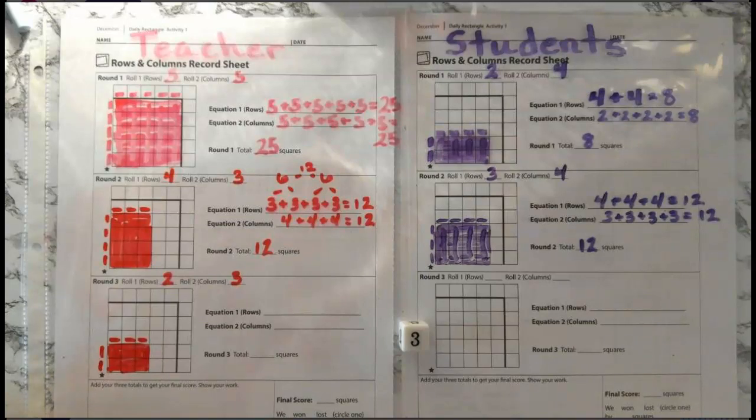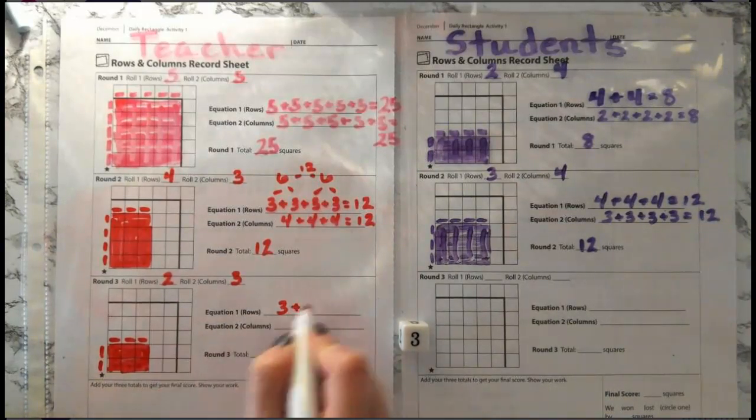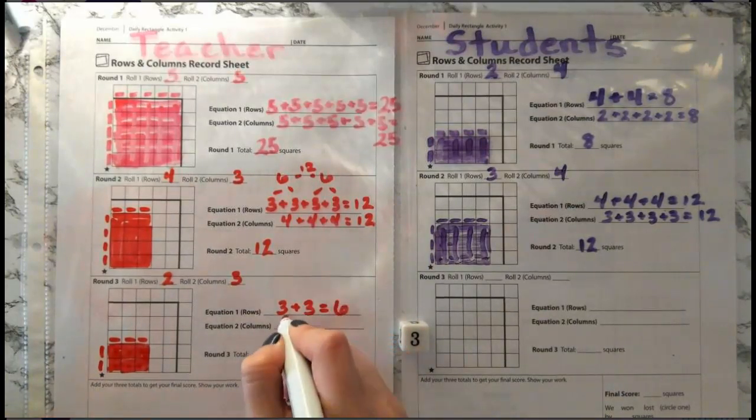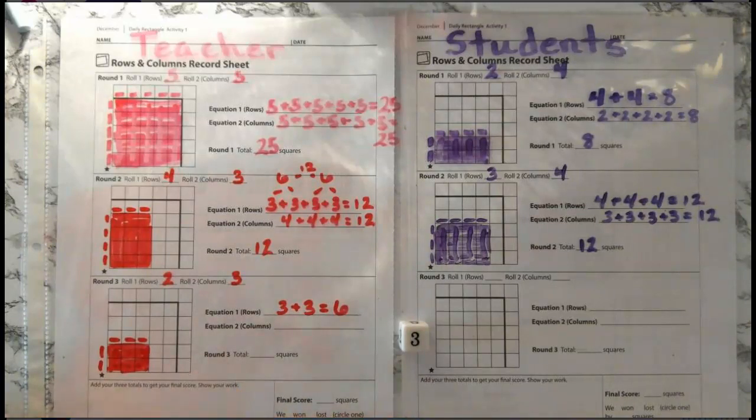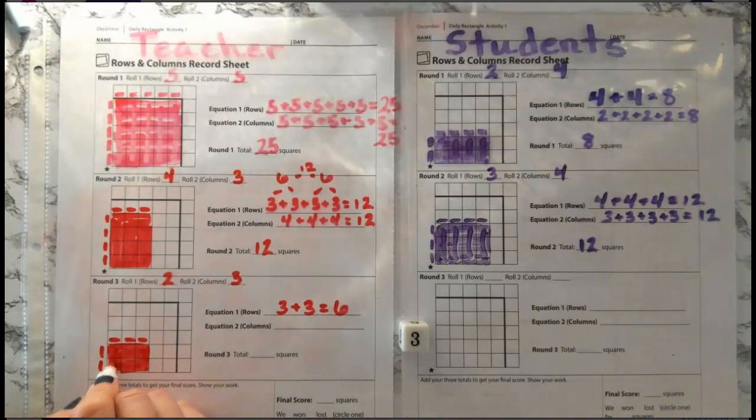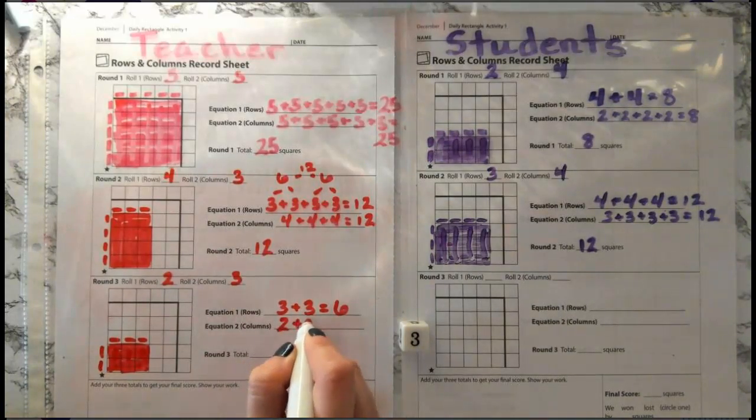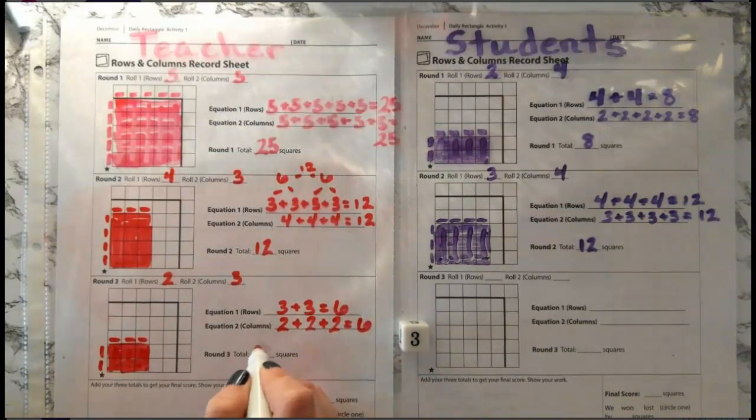What's an equation I could write for my rows? Looking across. If you were thinking three, because I have my first row of one, two, three squares, plus three, because my second row is one, two, three squares, great thinking. They must be the same. Two rows of three equals six. This is a double. Can you think of an equation for my columns? Now if you're seeing one, two, three columns of two, a good equation would be two for my first column, plus two for my second column, plus two for my third column. Two, four, six. I have six squares.